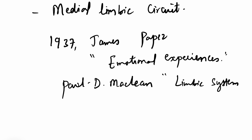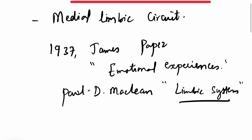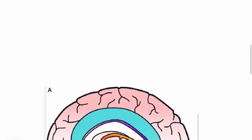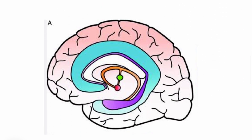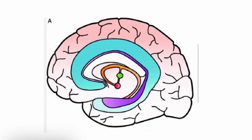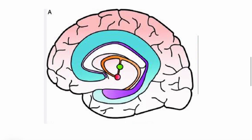We will discuss about this limbic system in some other lecture. Right now we will concentrate on the Papez circuit — what exactly is this Papez circuit? Let me show you this diagram of the medial side of the brain. Remember, this Papez circuit is bilateral, symmetrical, on the medial side and the inferior side of the brain. I will use a red color here to describe this circuit.